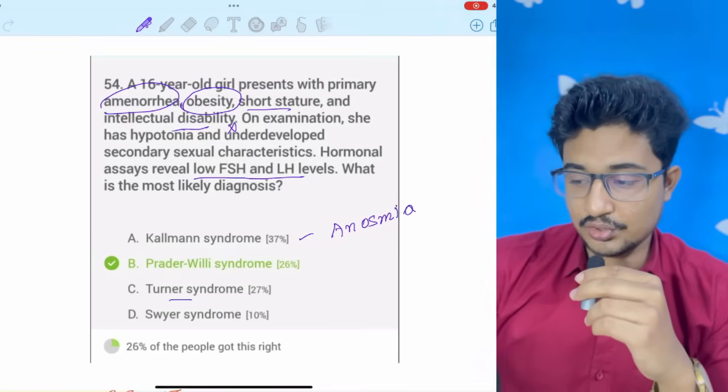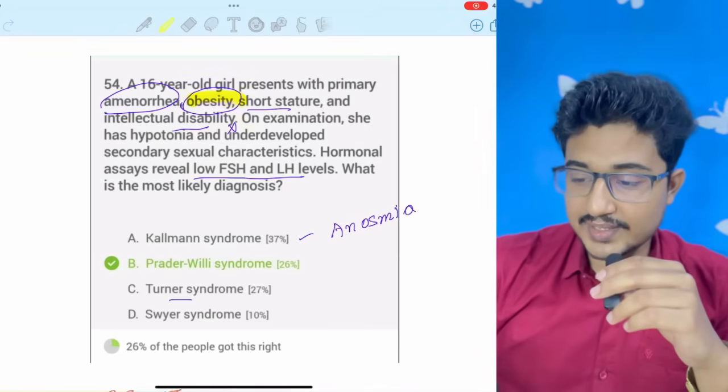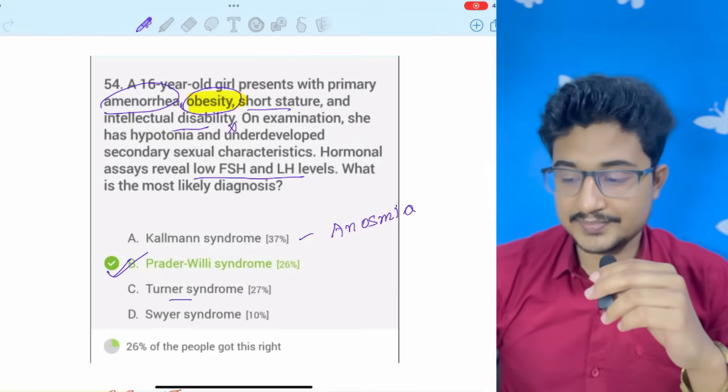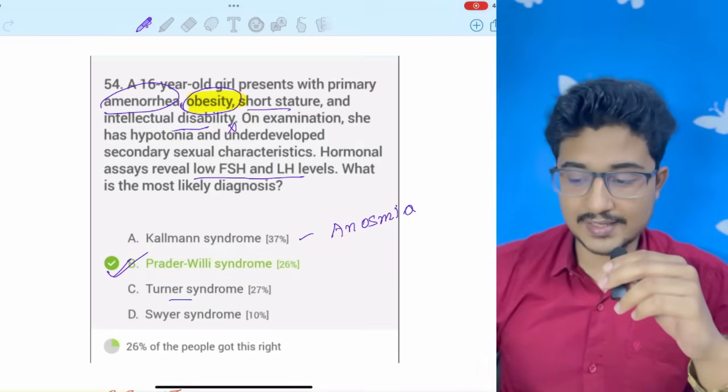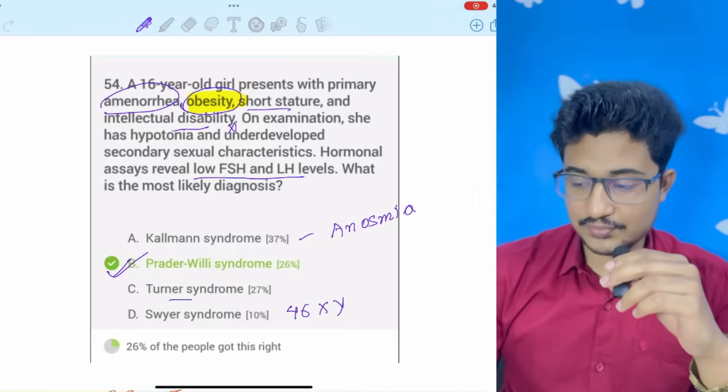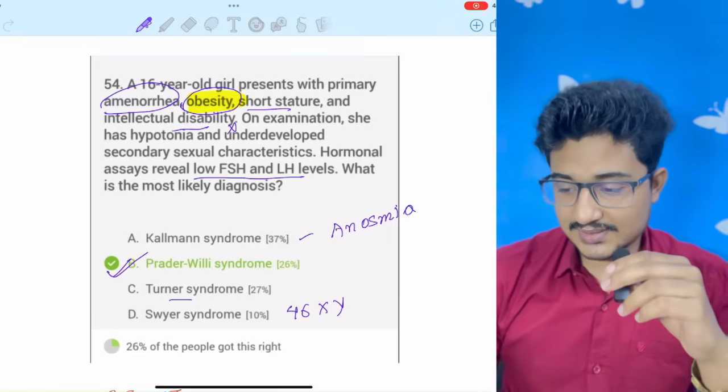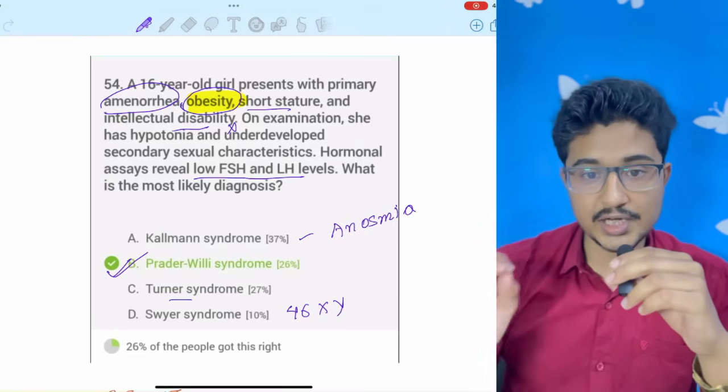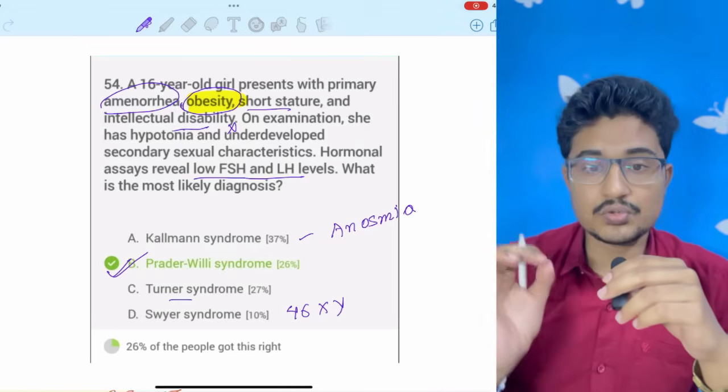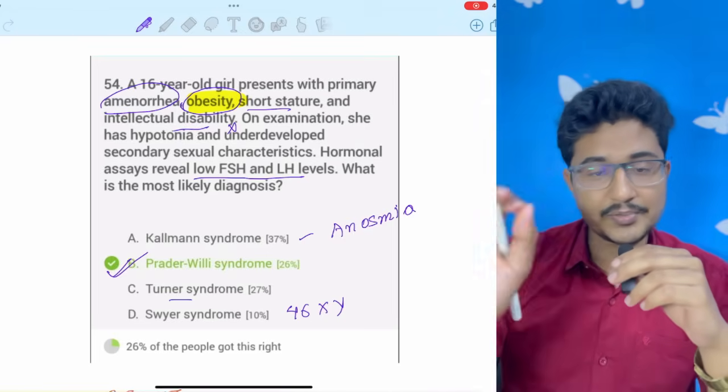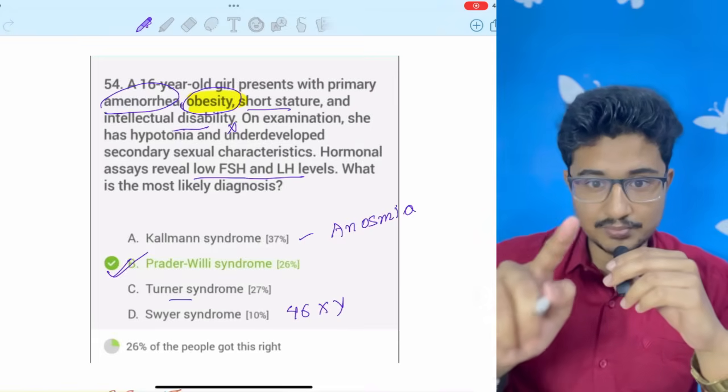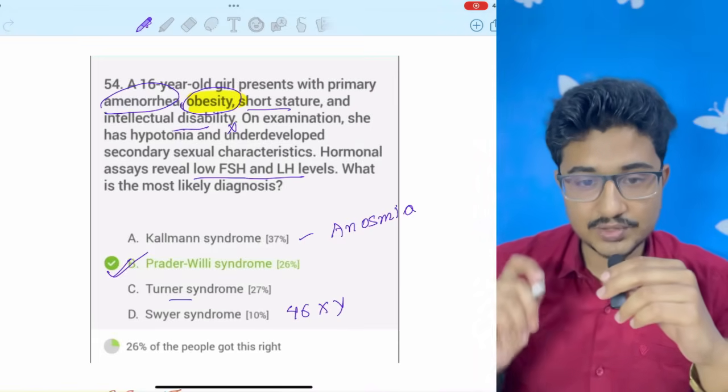But anosmia is not given in the question. In question, what pointer is given? Obesity. And obesity is associated with the Prader-Willi syndrome. Turner syndrome, it will show web neck and all. Swyer syndrome, it will say a genetic makeup of 46XY and other things. So, this was a simple one. You need to keep a watch on the keywords. Because what is happening today? There are very long-stem questions. So, you need to mark the buzzwords. So, you cannot mark on the computer screen. Try to slide your finger and on the buzzwords, you point them. Okay, so that you remember which is the buzzword in the question.